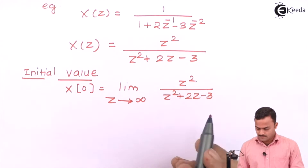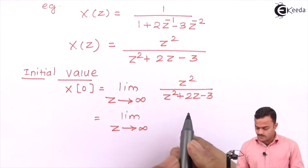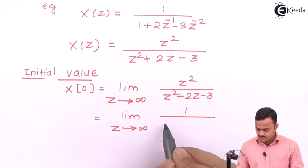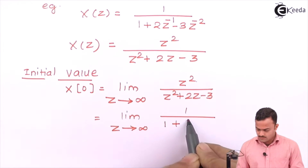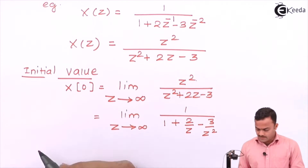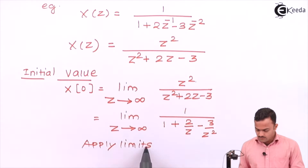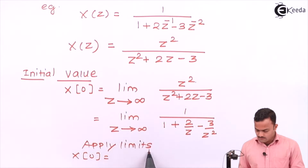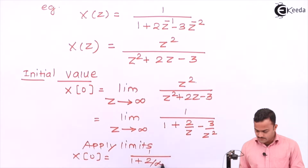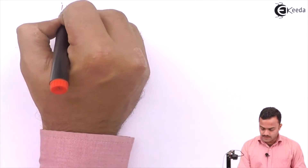To solve this, we will simply divide numerator and denominator by z² to obtain 1 upon (1 plus 2/z minus 3/z²). Applying the limit as z tends to infinity, we get x(0) as 1 upon (1 plus 2/∞ minus 3/∞²), which is 1 upon (1 plus 0 minus 0). So the answer is 1 — the initial value is 1.